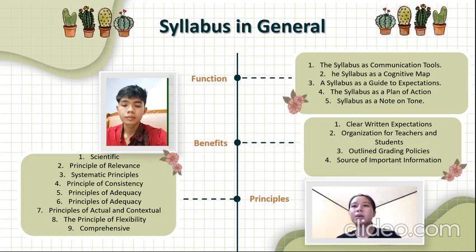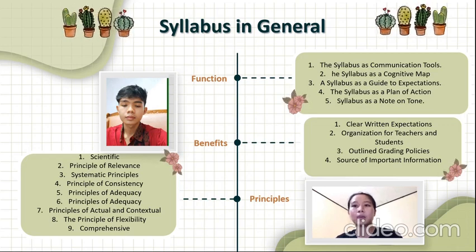The sixth is the principle of actual and contextual. This principle provides direction that the coverage of indicators, subject matter, learning experience, learning resources, and assessment system pays attention to the development of science and technology and is rooted in the realities of life. Science and technology are developing rapidly in the midst of society. Contextual means that the development of the syllabus should be in accordance with the context of the times and the lives of students.